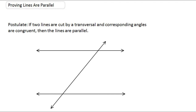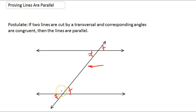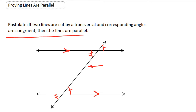To start, we have to have a postulate. The postulate says if two lines are cut by a transversal — here's our transversal, here are two lines — and the corresponding angles are congruent, so if this angle is congruent to that one, all you need is one pair. If one pair of corresponding angles are congruent, then these lines are parallel. Based on this postulate, we can prove some theorems.